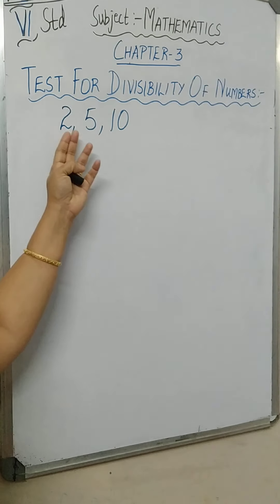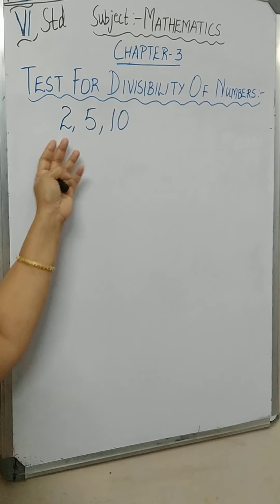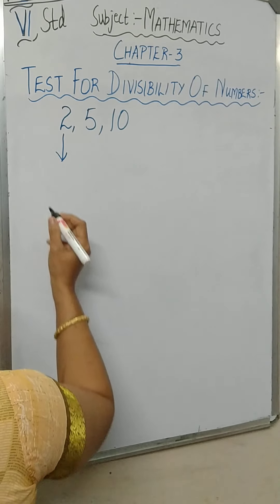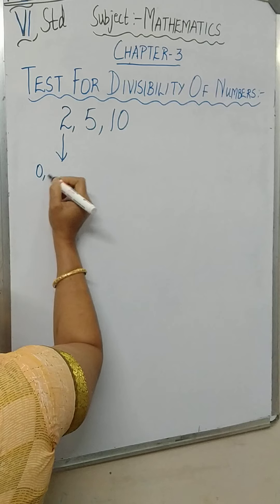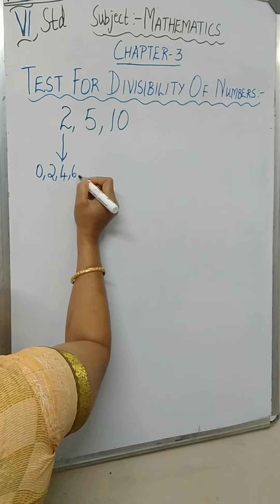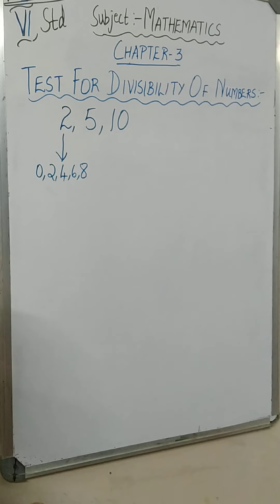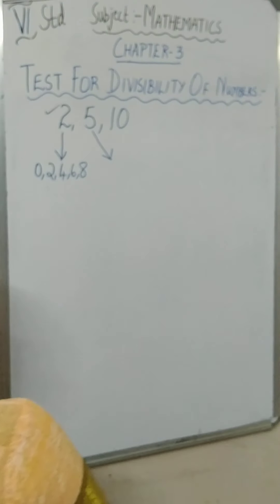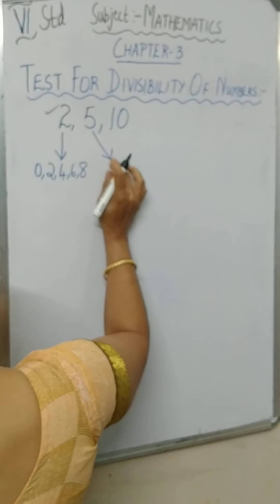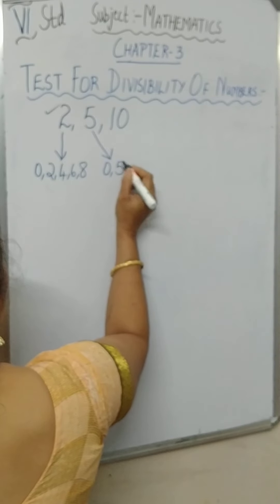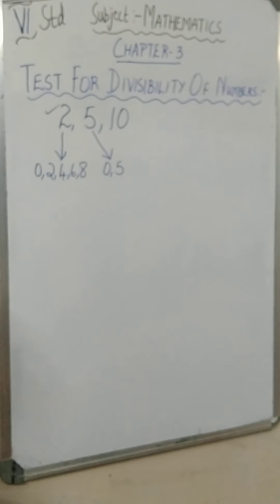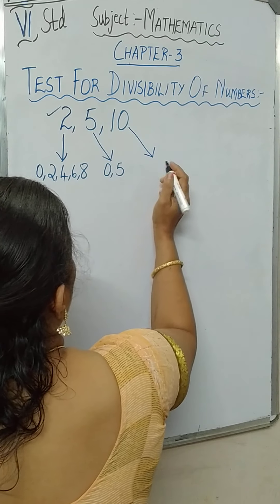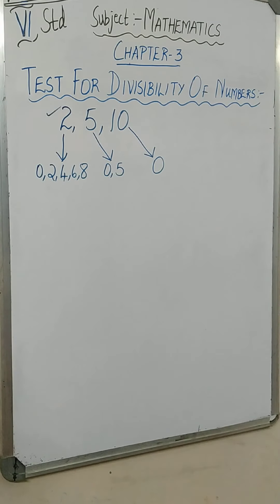Do you remember? Can you tell what is the rule for 2? Rule for 2 is: any number which has 0, 2, 4, 6 or 8 in its ones place — that number is divisible by 2. Can you tell the rule for 5? Rule for 5 is: any number with 0 or 5 in its ones place is divisible by 5. The rule for 10 tells that any number with 0 in its ones place is divisible by 10.